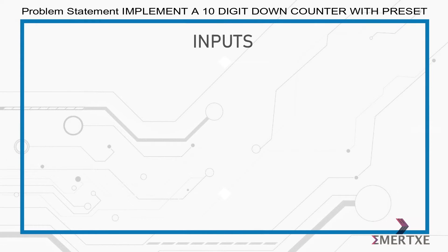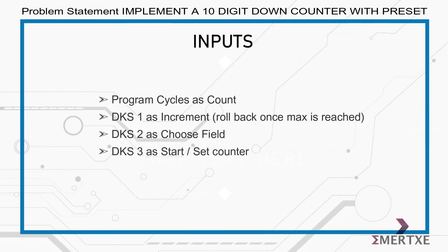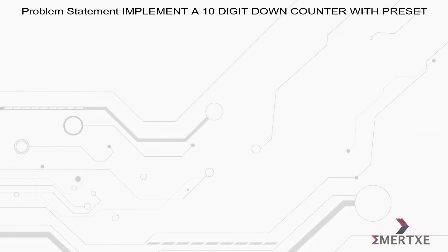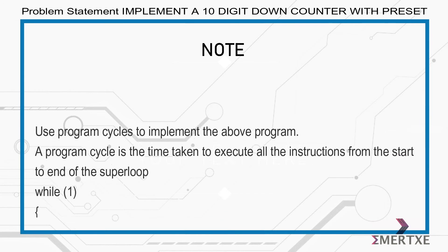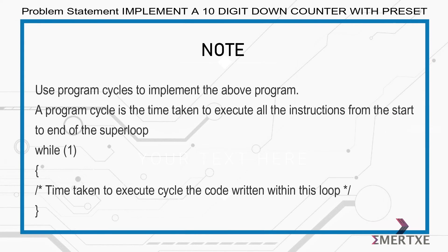The inputs required for this assignment are: program cycles as count, DKS1 increment, DKS2 choose field, and DKS3 start or set counter. Please note to use program cycles to implement the program. A program cycle is the time taken to execute all the instructions from the start to the end of the super loop.